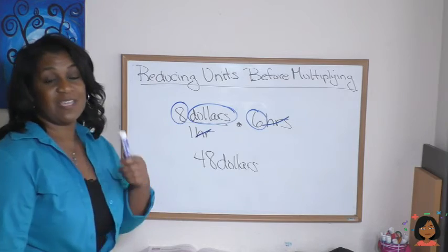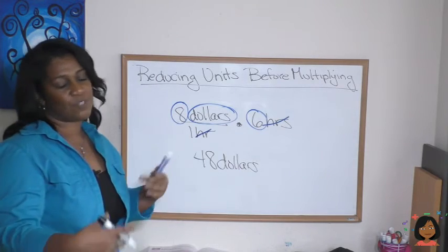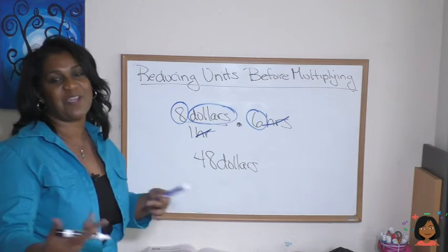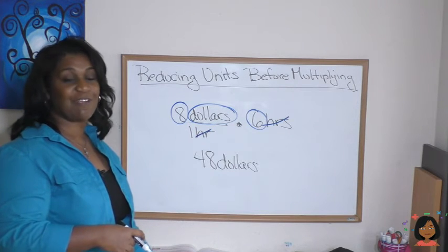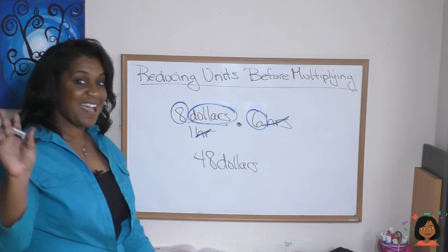Okay, pretty simple. Just as you can cross out numbers to reduce, you can cross out units as well, and then it makes the problem really easy to see what the answer is. I've got a bunch of practice problems for you ready to go on the site, so get to it. I'll see you next time. Bye!